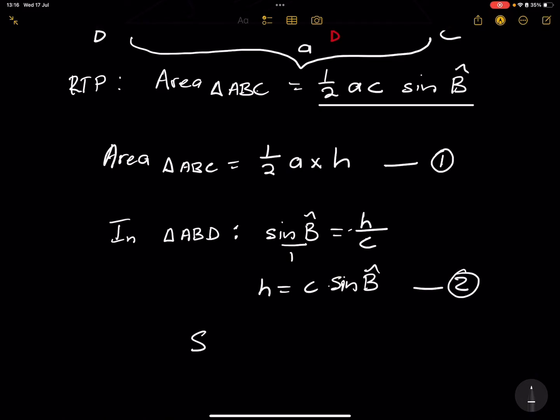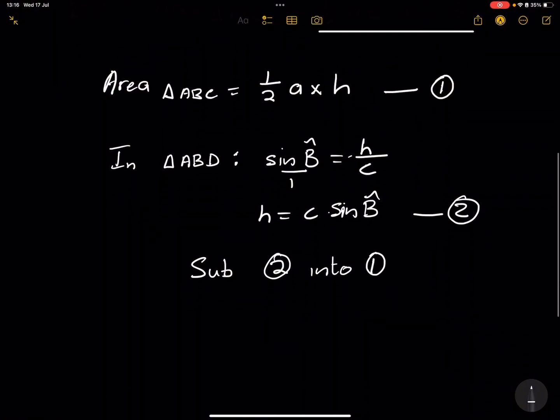So all I'm going to do is substitute equation 2 into equation 1. And so the area of triangle ABC will be equal to half times A. But now we know what H is.